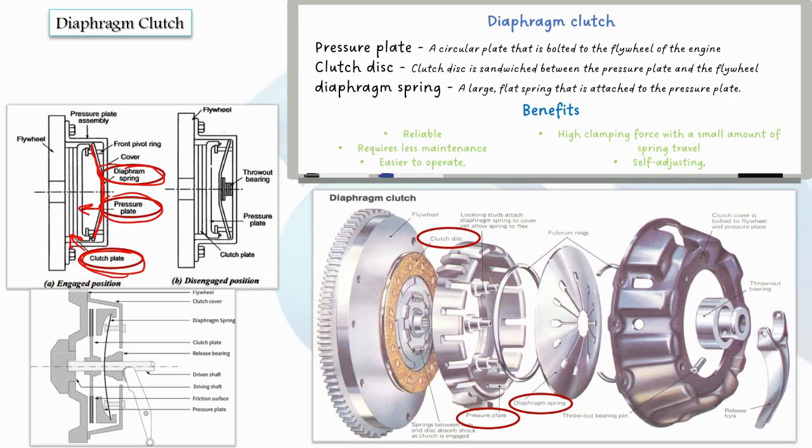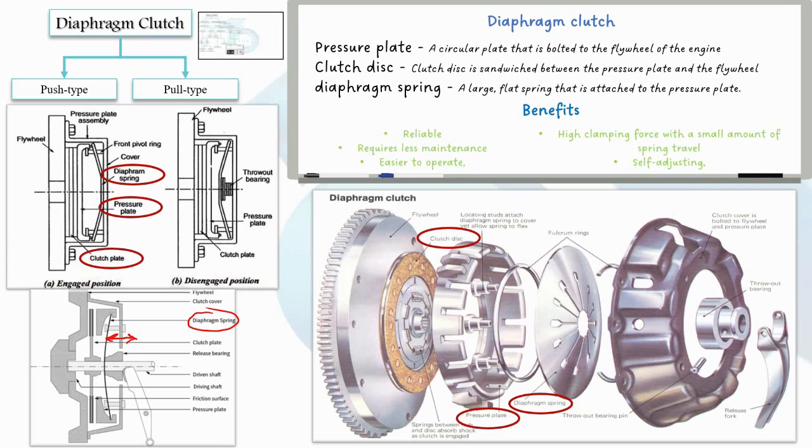The diaphragm clutch is known for its reliability, low maintenance requirements, and ease of operation. There are mainly two types of diaphragm clutch: push-type diaphragm clutch and pull-type diaphragm clutch. The main difference between the two types is the direction of force applied to the diaphragm spring. In the push-type, the force is applied from the outside of the spring. While in the pull-type diaphragm clutch, the force is applied from the inside of the spring.